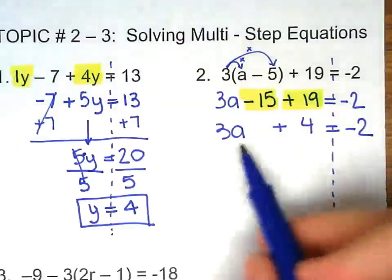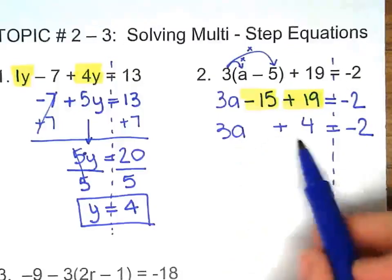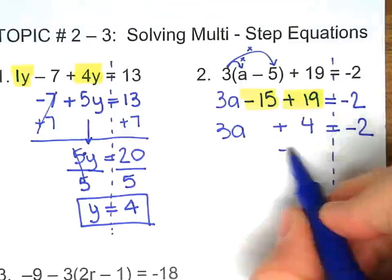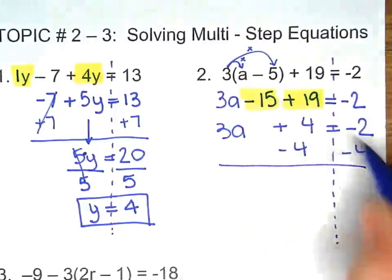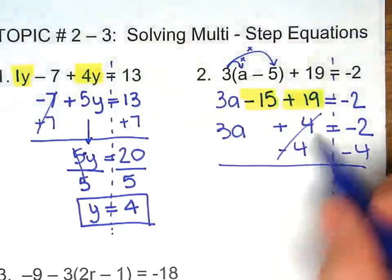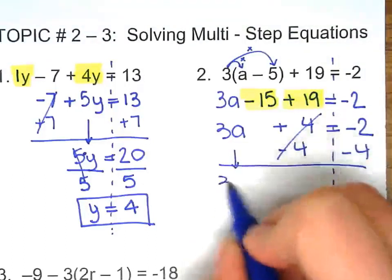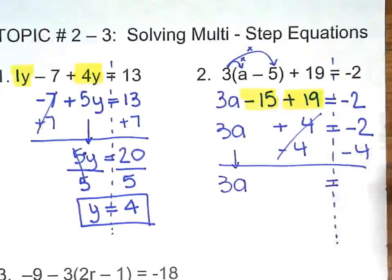Now it doesn't look that bad. We're solving for a. We need to get rid of 4. So minus 4. These two go, or equal 0. Bring 3a down. Negative 2 minus 4 is negative 6.